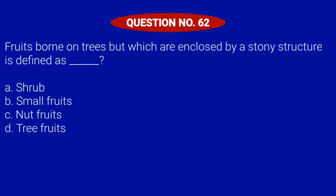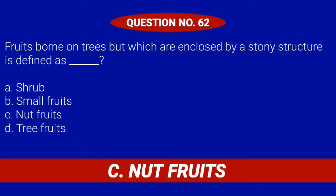Question number 62. Fruits born on trees but which are enclosed by a stony structure is defined as blank. Letter A: Shrub. Letter B: Small fruits. Letter C: Nut fruits. Or Letter D: Tree fruits. Correct answer is Letter C: Nut fruits.